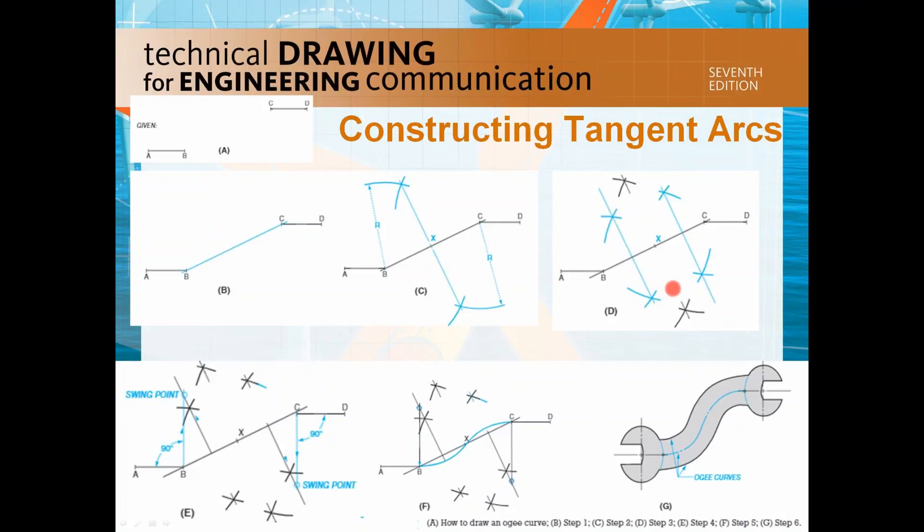Once you create this bisector, you are going to draw one perpendicular 90 degrees line, 90 degrees straight up and intersect this swing point. Do the same thing at point C and draw 90 degrees from CD and intersect at this point and that is the second swing point.